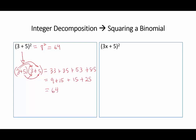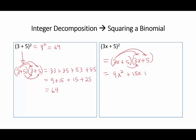When we square the binomial (3x + 5), it is just the binomial times itself. Distributing: 3x times 3x is 9x², 3x times 5 is 15x, 5 times 3x is 15x, and 5 times 5 is 25. Combining like terms: 9x² + 30x + 25.